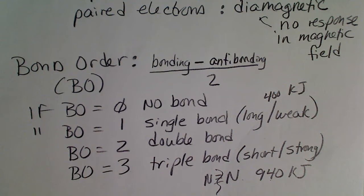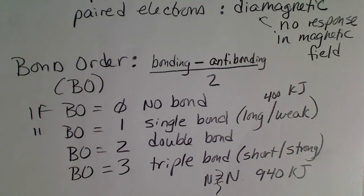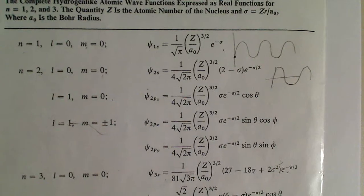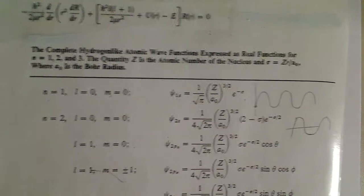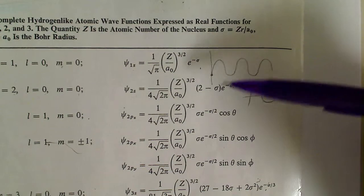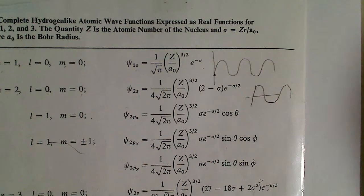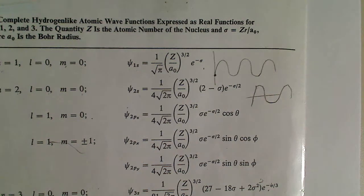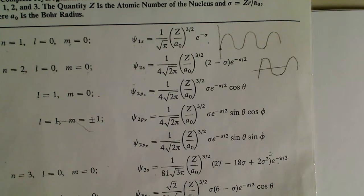Before we actually get into the building of the diagram, I want to remind us that the electron orbitals came from Schrodinger's wave equations. These are solutions to this differential equation for the hydrogen atom. And because electrons behave like waves, we're going to see that waves can interact with each other in a constructive way or a destructive way.